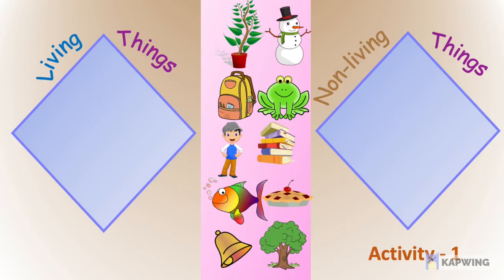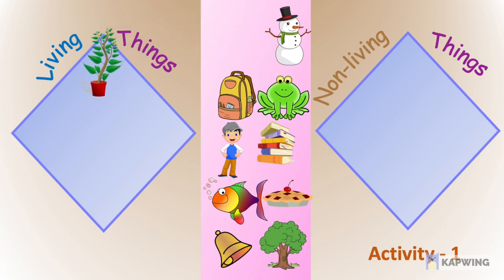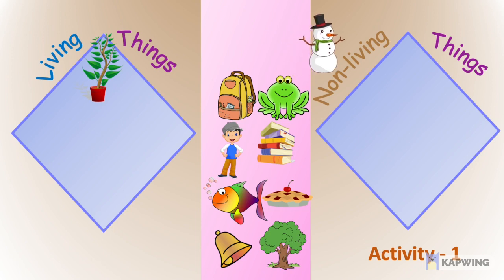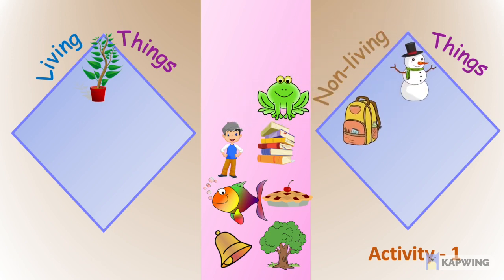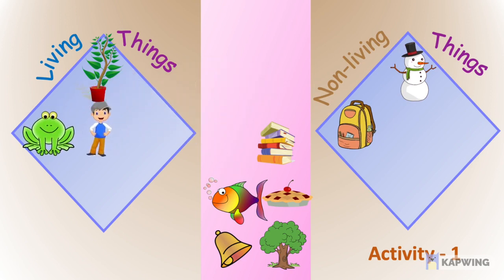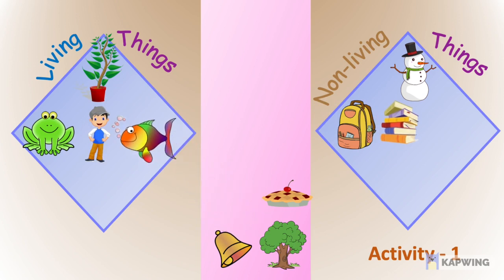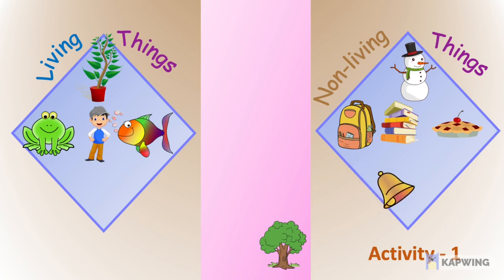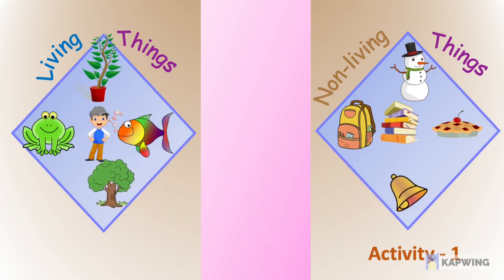In this activity, let's sort the living things from the non-living things. Tree is a living thing. Snowman is a non-living thing. Bag belongs to non-living things. Frog is a living thing. Boy is a living thing. Books are non-living things. Fish is a living thing. A pie belongs to non-living things. A bell belongs to non-living things. And the tree is a living thing.